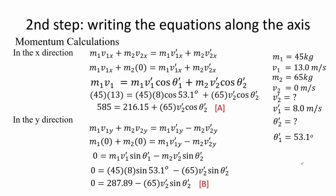We then write the equations along the two axes. For the x-axis, we see that it can be simplified after substitution and we turn it into equation A. Similarly, we do the same for the y-direction and simplify it to equation B.